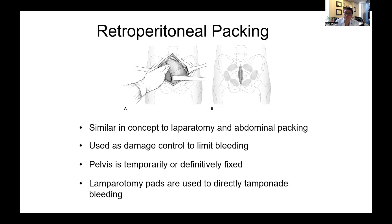Another tool I've personally found very helpful is retroperitoneal packing. It's a similar concept to packing the abdomen, except everything is kept within the retroperitoneum — you're basically applying packs to directly apply pressure, stop bleeding, and fill space within the pelvis. It's only useful if the pelvis is in some way stabilized. You need an external fixator or some form of stabilization of the pelvis to hold the bones together so you have something to pack against; otherwise you're just going to push things apart with your lap pads.